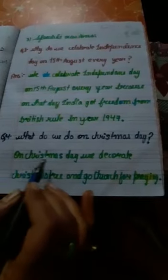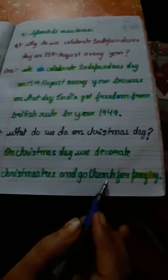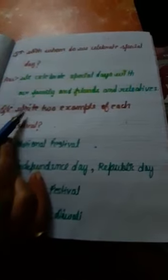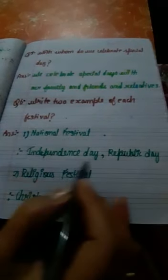Answer: On Christmas Day, we decorate the Christmas tree. Question number 5: With whom do we celebrate special days? Answer: We celebrate special days with our family, friends, and relatives. Question number 6: Write two examples of each festival. National festivals: Independence Day and Republic Day.